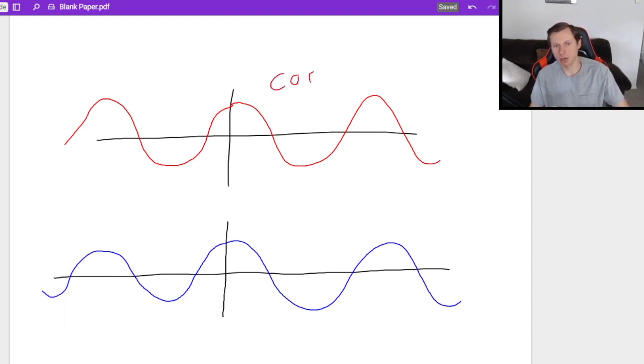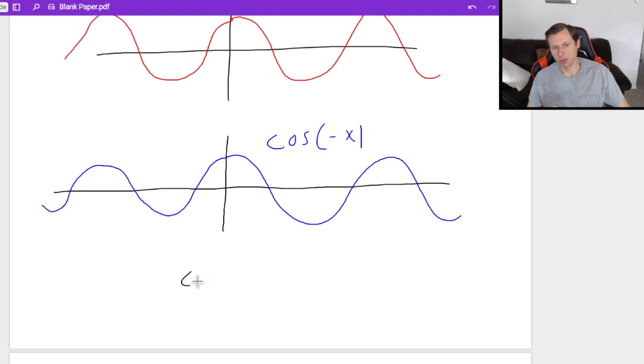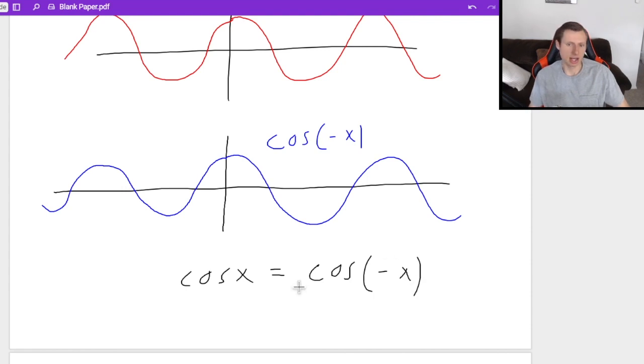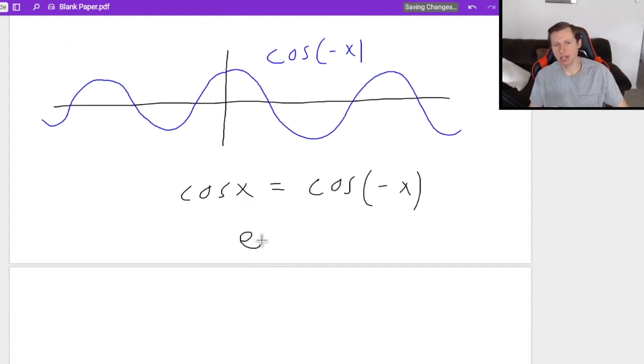Again, the top one is cosine x, the bottom one is the cosine of negative x. So it looks like when there's a y-axis reflection, nothing changes for the cosine. So in other words, the cosine of x is equal to the cosine of negative x. And the reason why this is, we say cosine is an even function because we have this relationship.